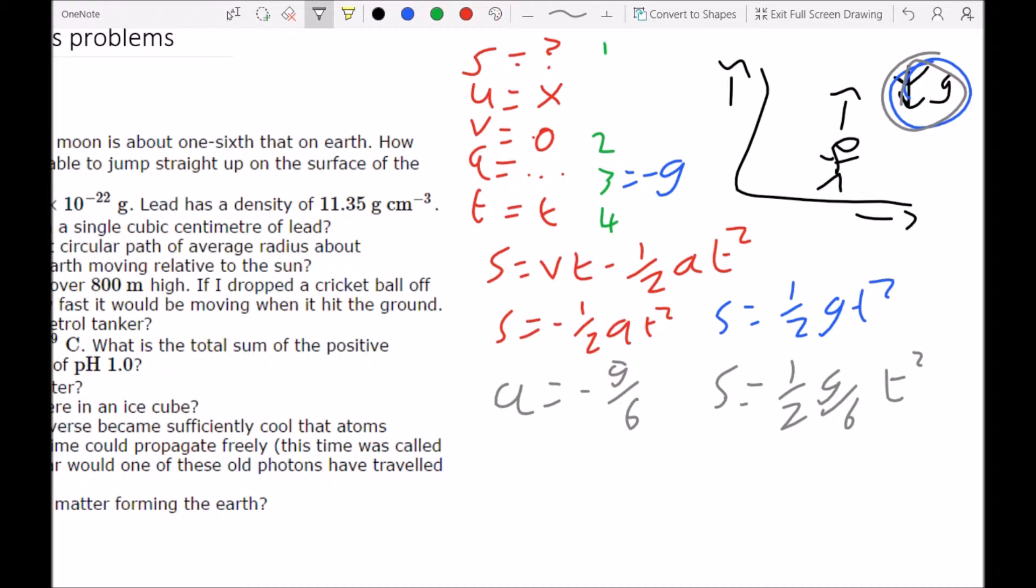So you can see that the acceleration on the Moon is a sixth of that of what it is on Earth, which means when you're looking at the value of s, it will be six times as large on the Moon, because you're dividing by six, so this thing has to be six times as large.